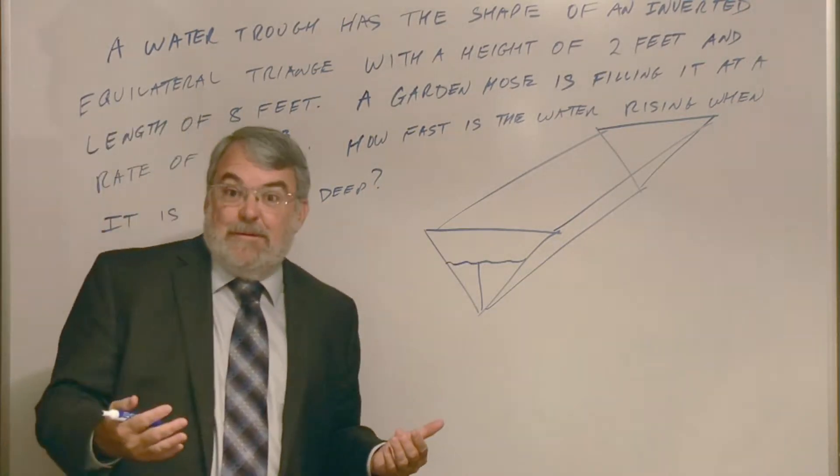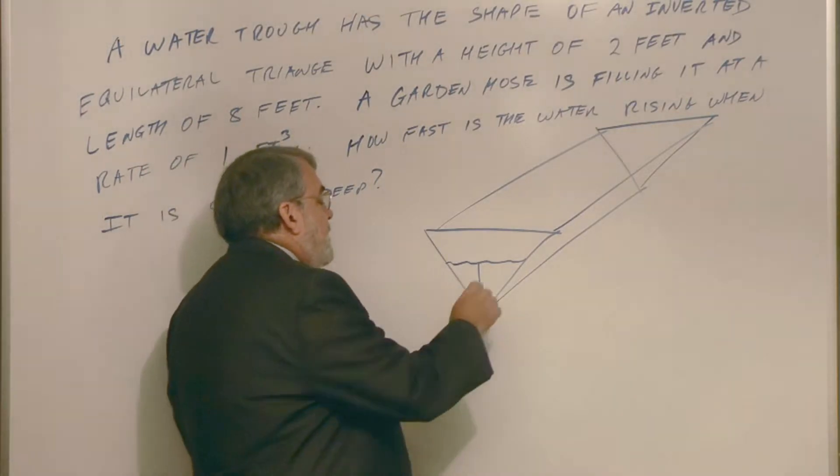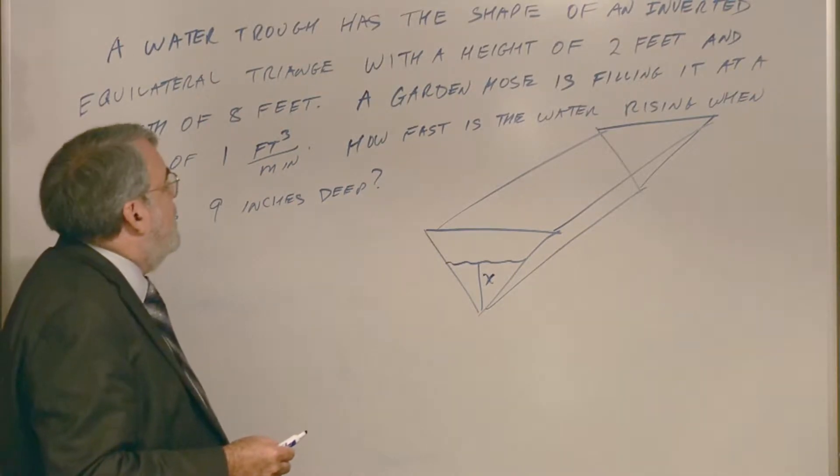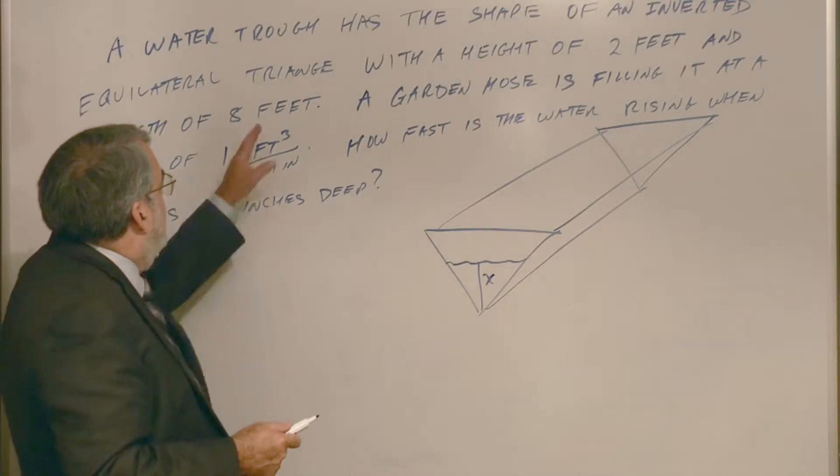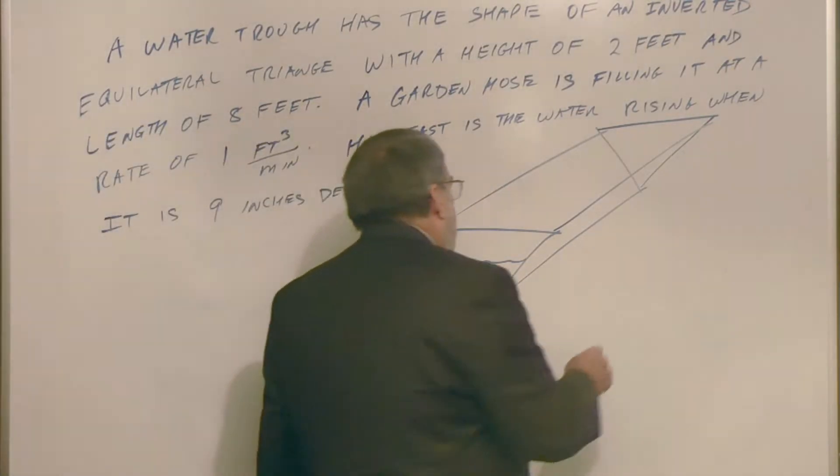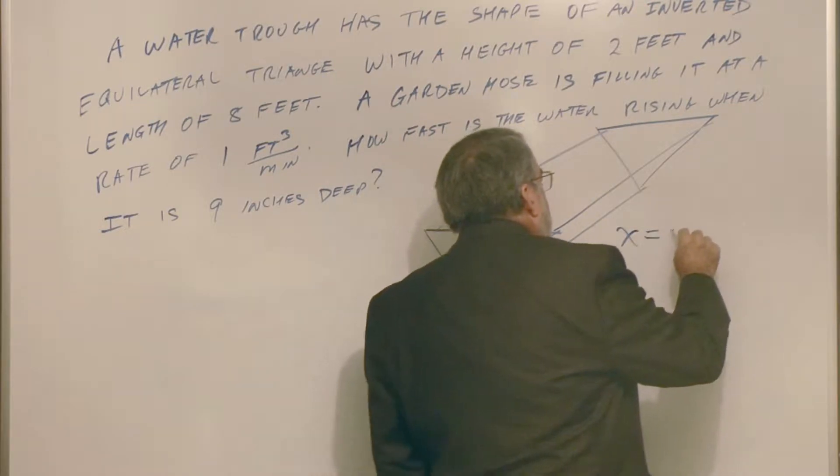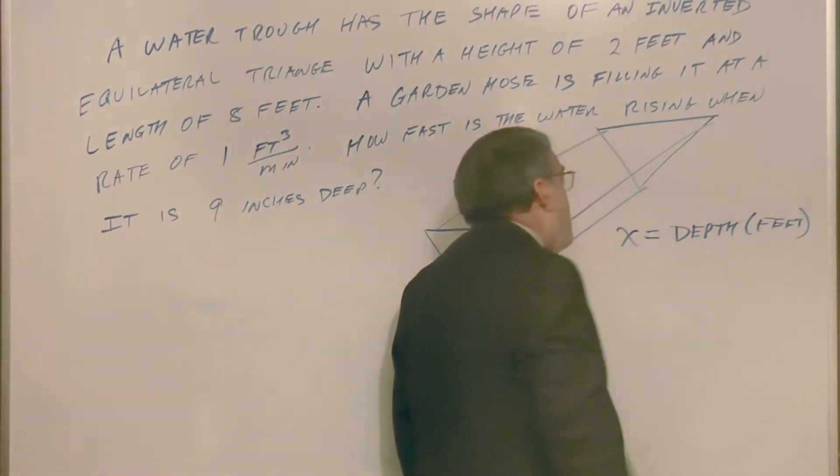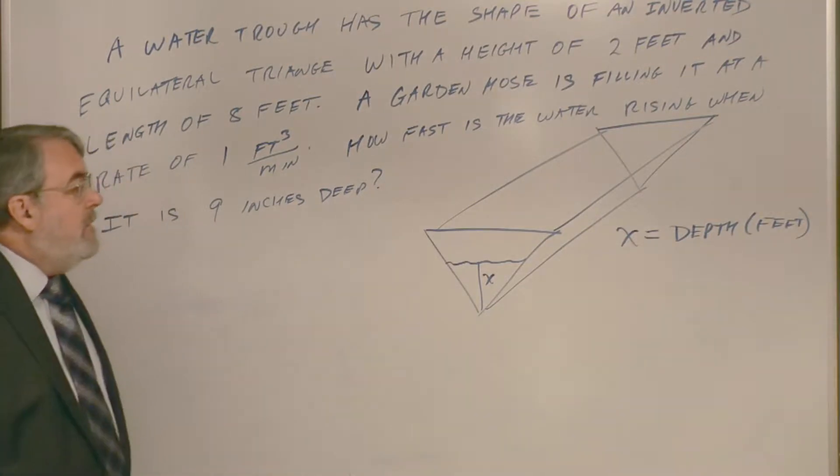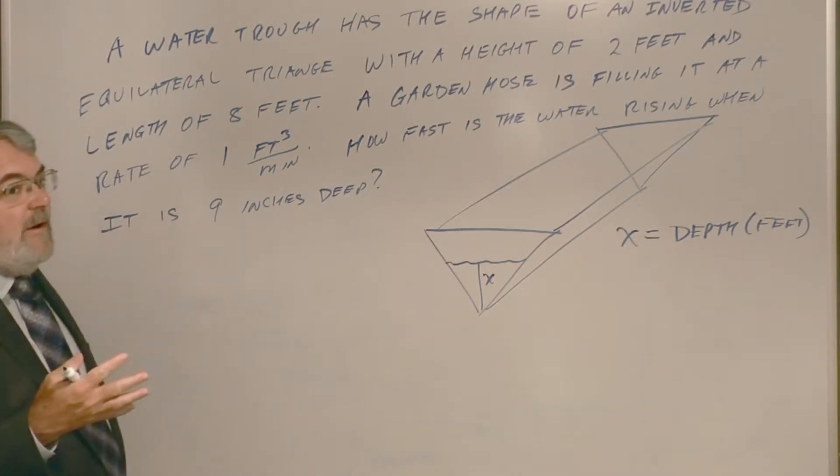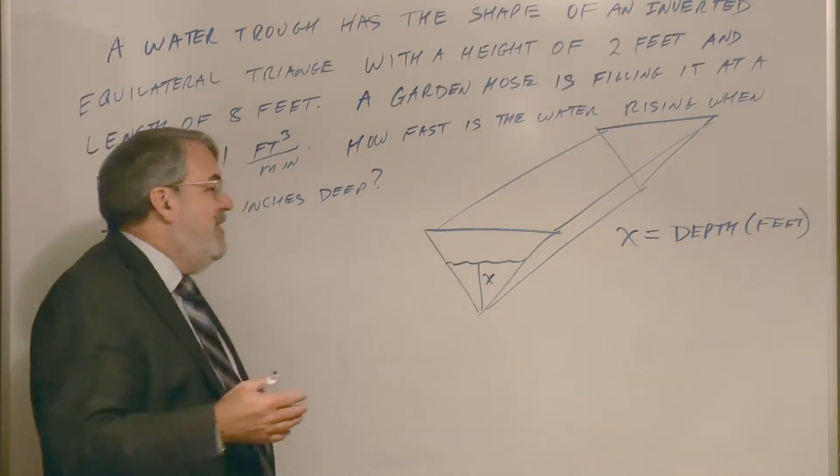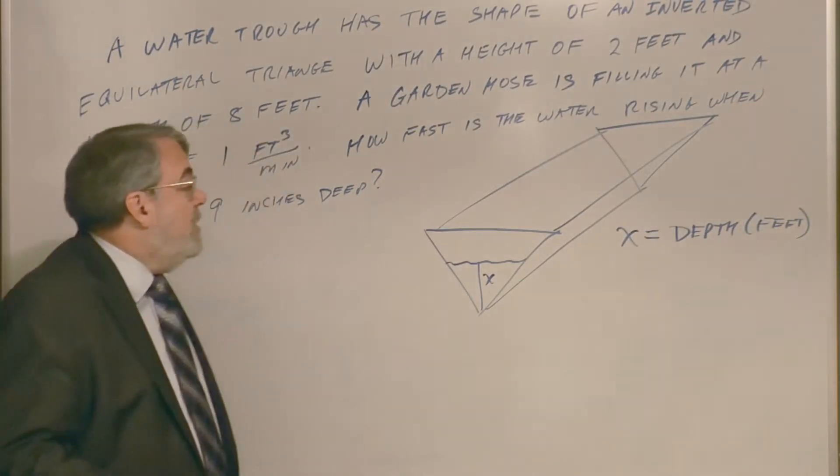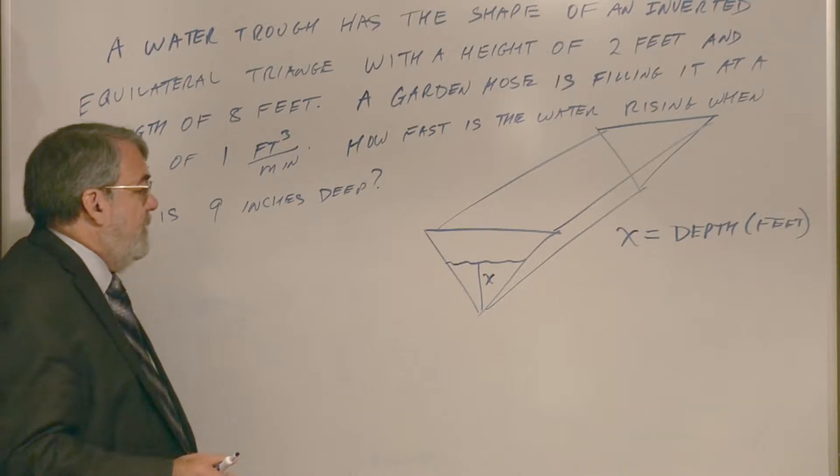Well, let's say the water is at a depth of, and I know this says nine inches, but we need the formula for the volume of the trough, first of all, so we can take the derivative. We can't plug numbers in until after we take the derivative. So, let's say the depth is x inches, x inches or x feet. I'll probably go with cubic feet or with feet.